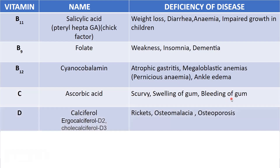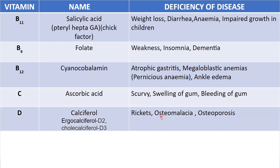Next is vitamin D, called calciferol. It has subtypes like ergocalciferol (D2) and cholecalciferol (D3). Deficiency of vitamin D leads to rickets. Two other symptoms are osteomalacia — soft bones wherein the bones fail to harden — and osteoporosis, which is the weakening of the bones.